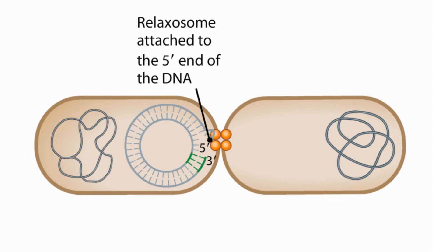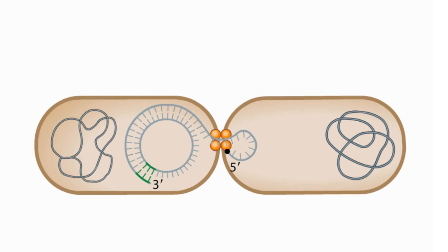The relaxosome remains bound to the 5' end of the nicked strand, and the DNA-protein complex is transferred through a pore protein into the recipient, where it remains associated with the membrane while the rest of the strand is transferred through the pore.